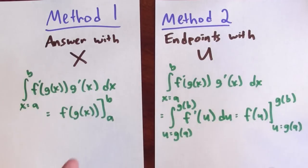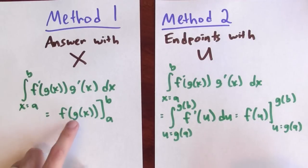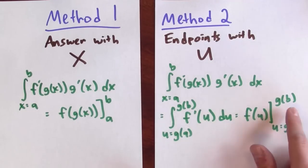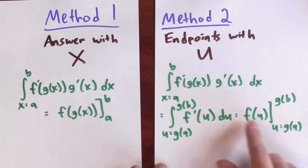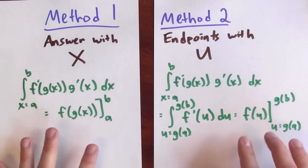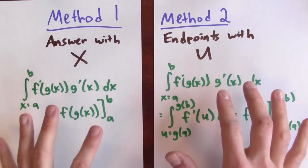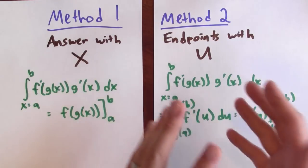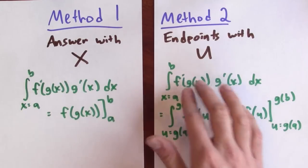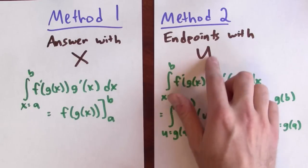At the end of it, I'm doing the same calculation. In both cases, I'm calculating f of g of b, and I'm subtracting f of g of a. But I'm setting it up slightly differently. In the first case, I'm finding the antiderivative in terms of x, and in the second case, I'm changing the bounds on the integral to be in terms of u.